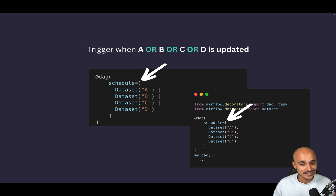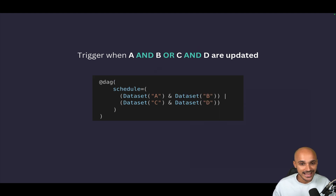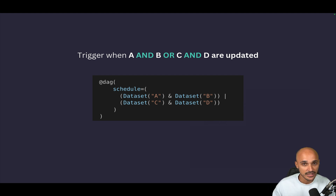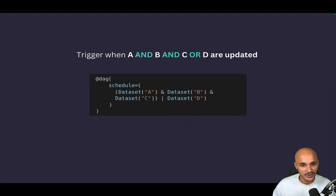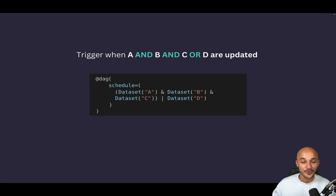For another example: to trigger your DAG when datasets A and B, or C and D are updated, you use parentheses to create two groups and combine the AND and pipe operators. If one of the groups is updated, you can trigger the DAG. You can also combine them as A and B and C or D. This is very powerful because it opens so many more possibilities than before with the new conditional operators for datasets.